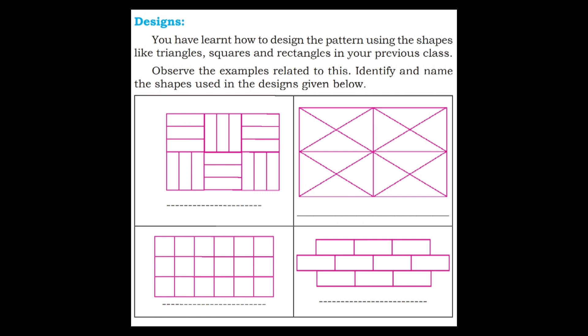Identify and name the shapes used in the designs given below. The first shape is a square. Square is a rectangle. This shape uses square and rectangle. The second one is a rectangle. This shape uses rectangle and triangle.